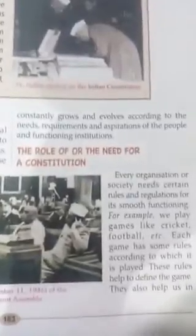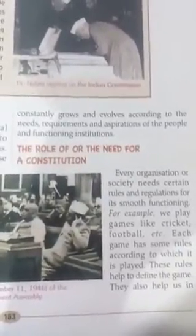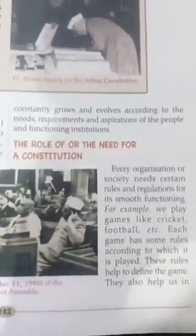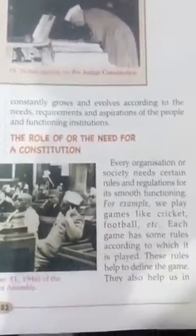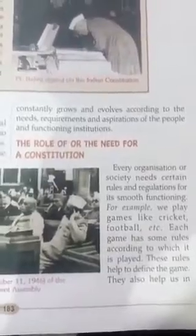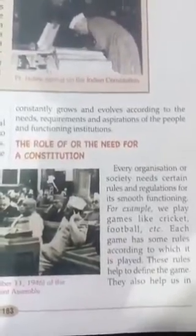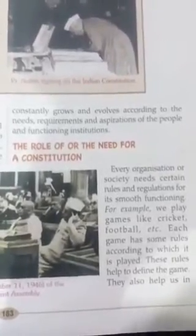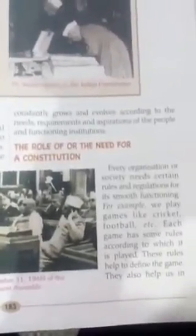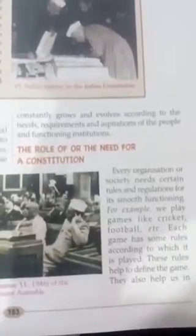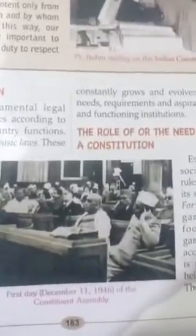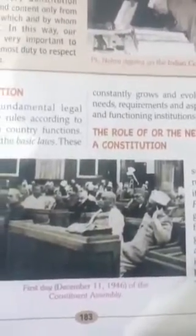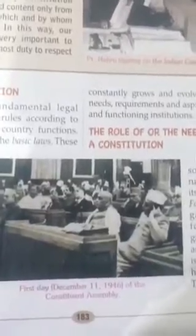They advised in 1946 to constitute a Constituent Assembly. The elected representatives — around 350 people — came together and formed this Constituent Assembly. It had different committees. The Constituent Assembly first started working on 11 December 1946, which was the first day it began its work.